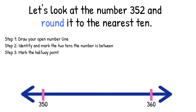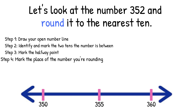Step 3: Mark the halfway point. Halfway between 350 and 360 would be 355. Step 4: Mark the place of the number you are rounding. You have to figure out which side of the number line your number goes on. 352 — is it before 355 or after 355? Right, 352 is before 355, so we're going to place it right here.